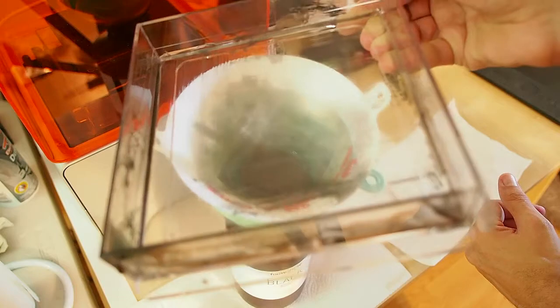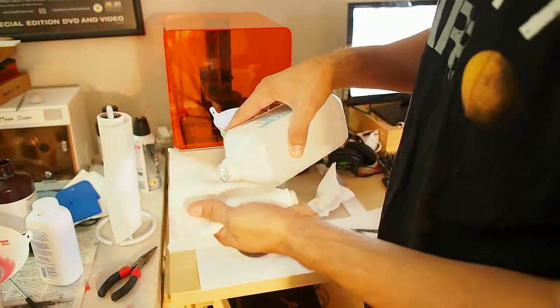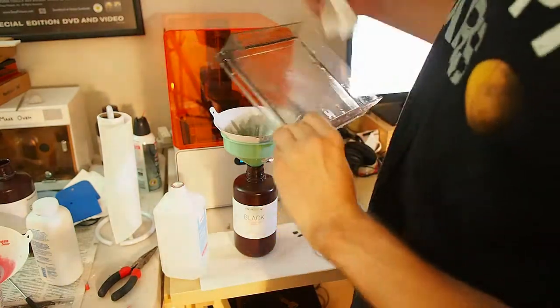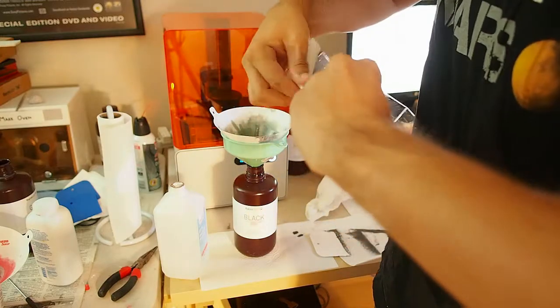So scrape everything out and get it as clean as you can. That's pretty much it for that process. The last thing I like to do is take some isopropyl alcohol, pour it on a paper towel, and go along the outer side and edges of the resin tank.